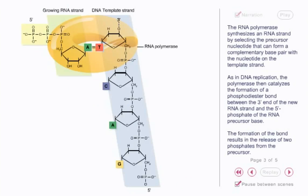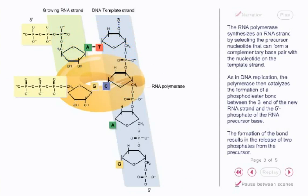The RNA polymerase synthesizes an RNA strand by selecting the precursor nucleotide that can form a complementary base pair with the nucleotide on the template strand.